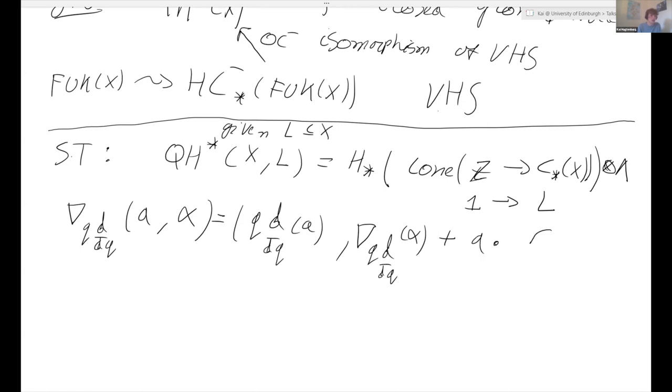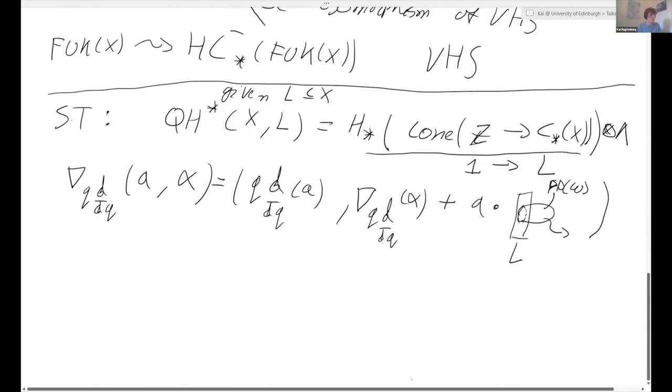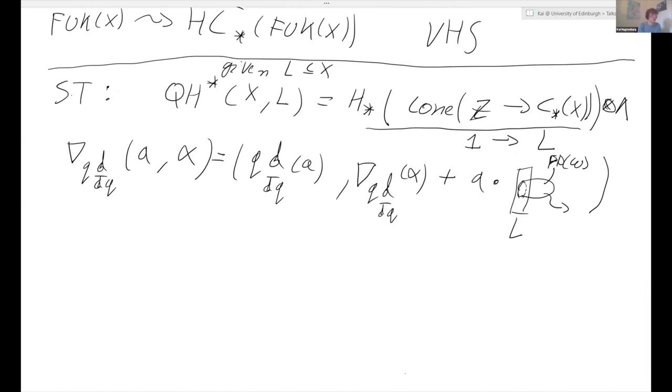Which is A times the following cycle, which is where we take our Lagrangian L, we consider the moduli space of disks with boundary on the Lagrangian, with one marked point to lie on the Poincaré dual of Omega, and with an extra marked point that we use to evaluate a cycle. So again, this moduli space sweeps out a cycle, and that defines our new cycle. And it's a very pleasant exercise to check that indeed this definition is well defined. So this takes care of the bubbling that can happen. And that's precisely because we consider the homology of this cone complex. So this equips relative quantum cohomology with a connection. And in fact, this forms a VHS as well.